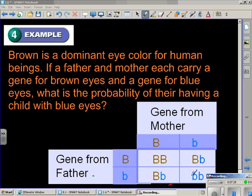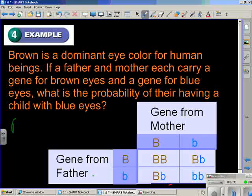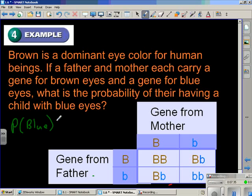The two recessive genes are necessary. That only occurs one time. So the probability of blue eyes is going to be one out of four, or twenty-five percent. One out of four to have blue eyes if both the mother and the father have the dominant gene for brown eyes and the recessive gene for blue eyes.